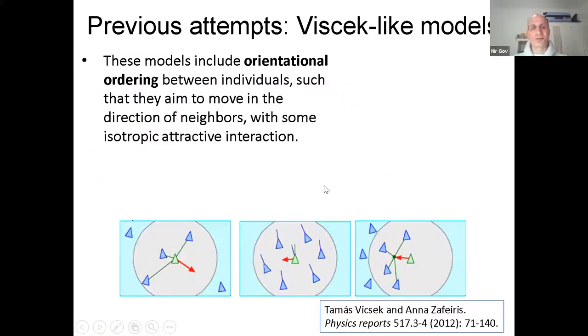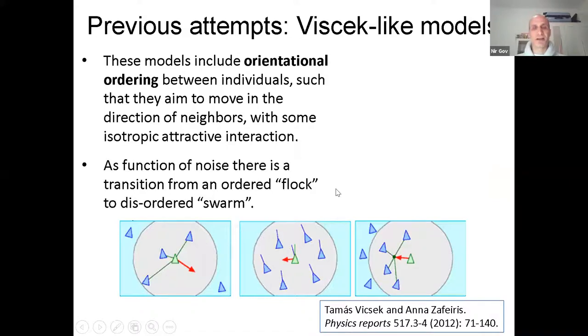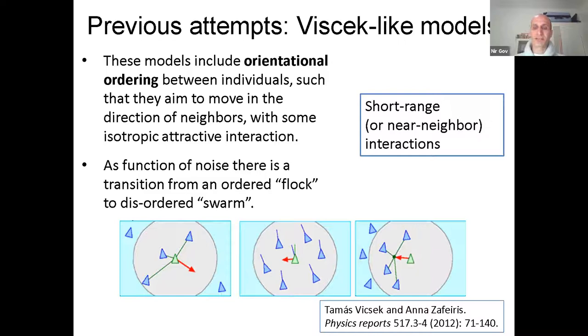Just to remind you, Vicsek-like models essentially say that each agent is influenced by several of its neighbors, let's say within some radius, and it can judge their direction of motion, and it can realign its direction of motion to be co-aligned with their mean direction of motion. And there's a nice review of that by Tamas Vicsek himself. If you add noise to such a system, you can break this order. And of course at very high noise, the system disperses into a gas. But right at the transition point, you can have something which sort of looks like a disordered swarm. But again, it's only based on short-range interactions or near-neighbor interactions.